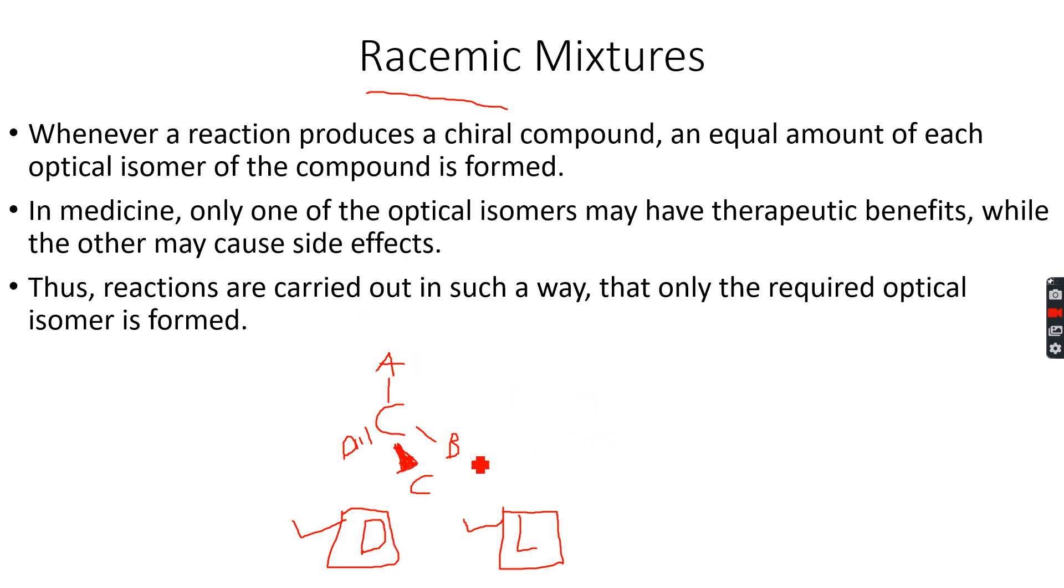The reaction which produces both these isomers is carried out in such a way that instead of getting a mixture of both, we get only one, because we have to use only one. If we get a mixture and put the mixture in a medicine, there will be some amount of D and some amount of L, but we only want D in the medicine. So we carry out a reaction to get only one isomer, which is the D isomer in this case.